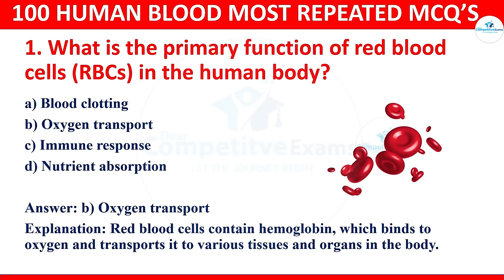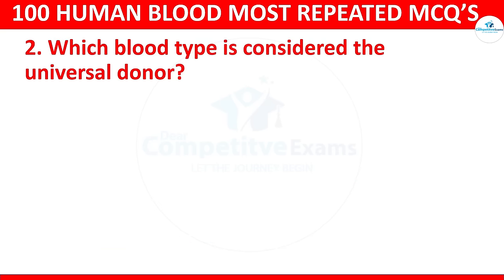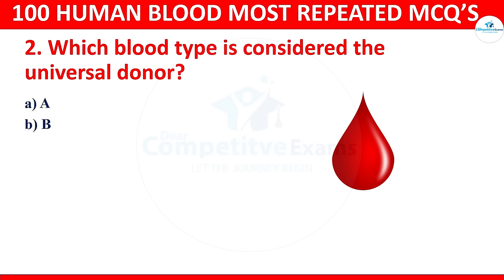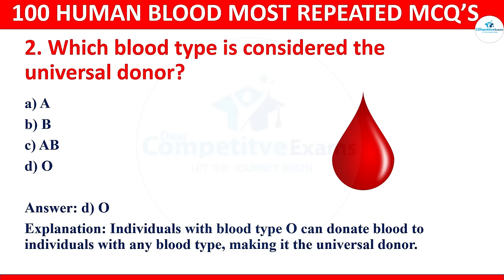Question 2: Which blood type is considered the universal donor? The options are A, B, AB, or O. The correct answer is O. Individuals with blood type O can donate blood to individuals with any blood type, making it the universal donor.